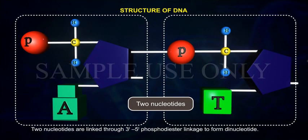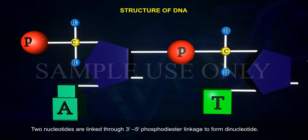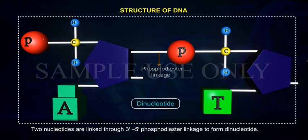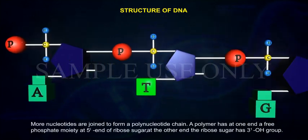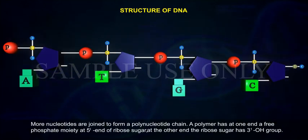Nucleotides are linked through 3'-5' phosphodiester linkage to form a dinucleotide. More nucleotides are joined to form a polynucleotide chain.